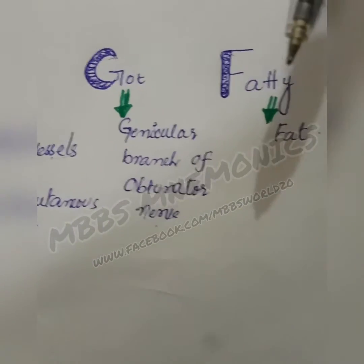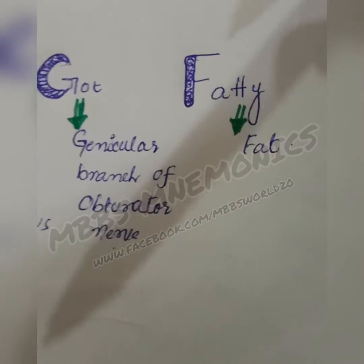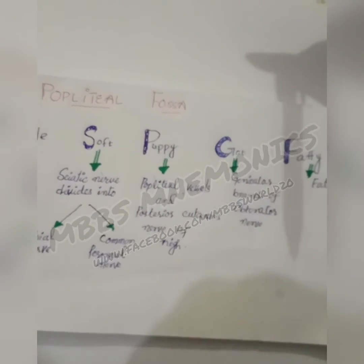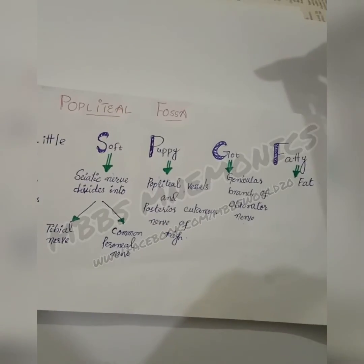G is for the genicular branch of the obturator nerve, and F is for fat. So to recap, the mnemonic is: 'A Little Soft Puppy Got Fatty.' Thanks for watching.